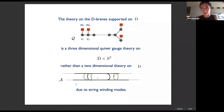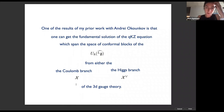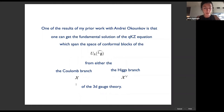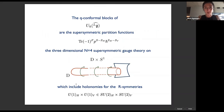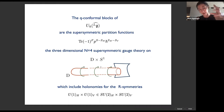One of the results of my prior work with André Okounkov is that one can get fundamental solutions of the qKZ equation — solutions that span the space of conformal blocks of the quantum affine algebra — from either the Coulomb branch or the Higgs branch of this three-dimensional gauge theory compactified on a circle. The q-conformal blocks are supersymmetric partition functions of the three-dimensional gauge theory on D × S^1, which include holonomies for the R-symmetries and where one rotates the domain D and the extra transverse complex plane — with parameters p and ħ-bar respectively.